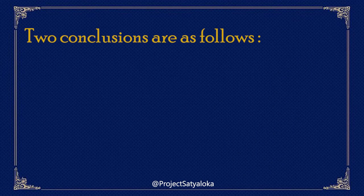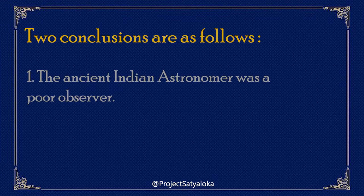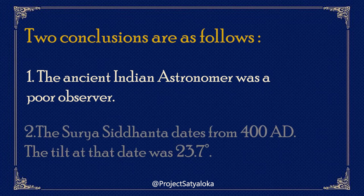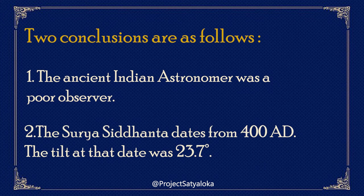European scholars dismissed this Indian value of obliquity as a sloppy effort of measurement. Their two conclusions were: first, the ancient Indian astronomer was a poor observer whose data is not to be trusted within one degree — perhaps he had poor instruments or was not technically competent, or both. Second, the Surya Siddhanta dates from 400 AD, when the tilt was 23.7 degrees, and the best the Indian could do was record it as approximately 24 degrees.